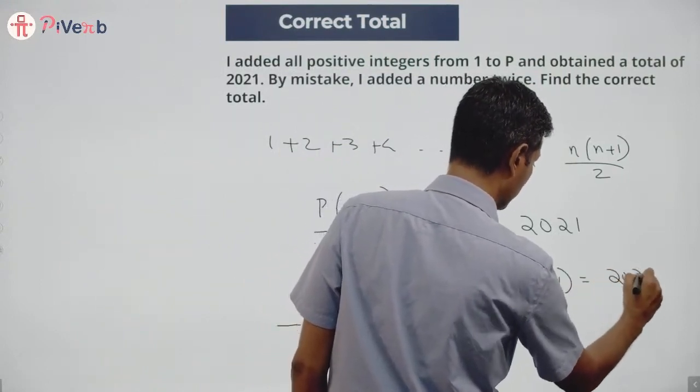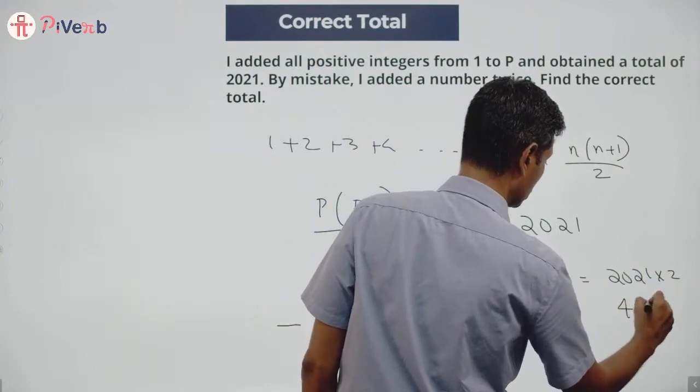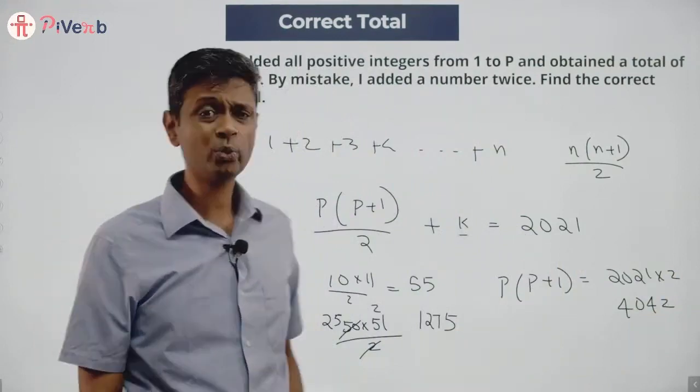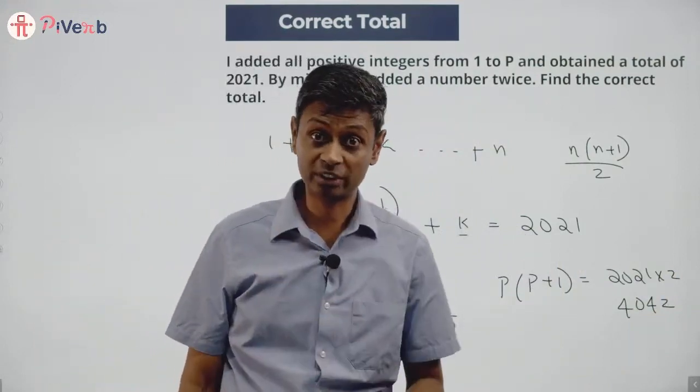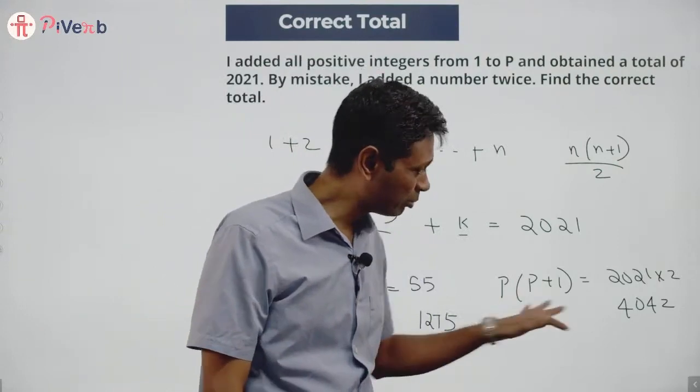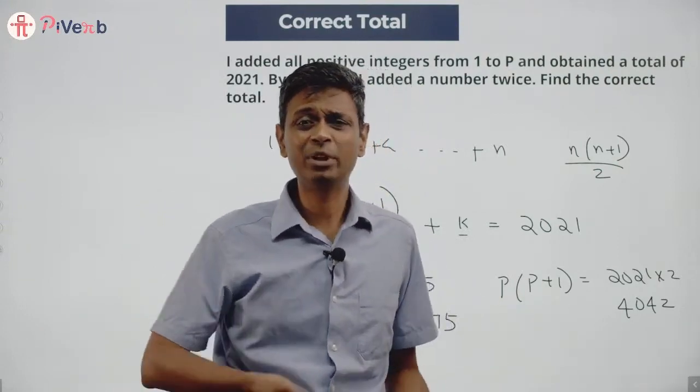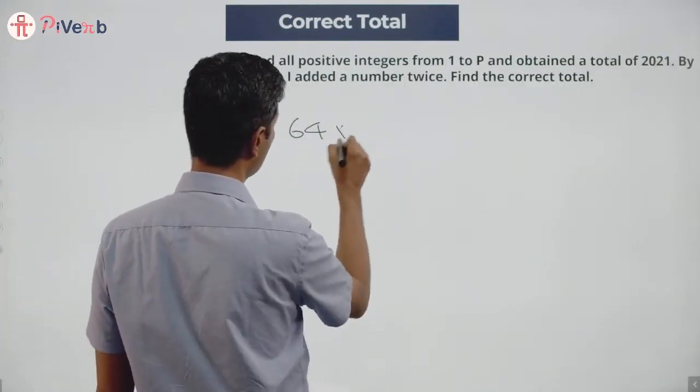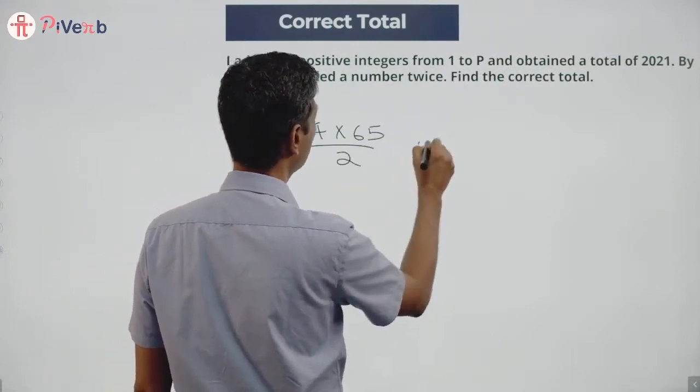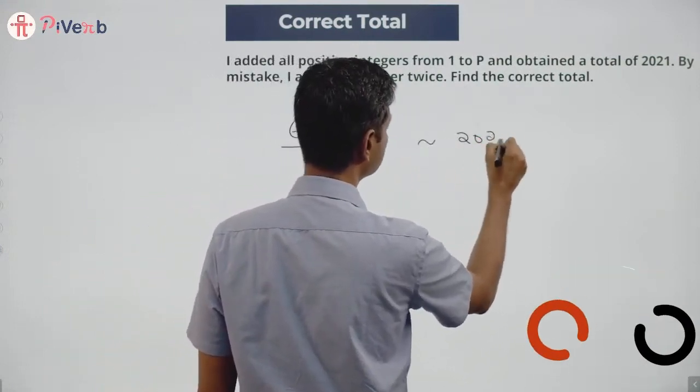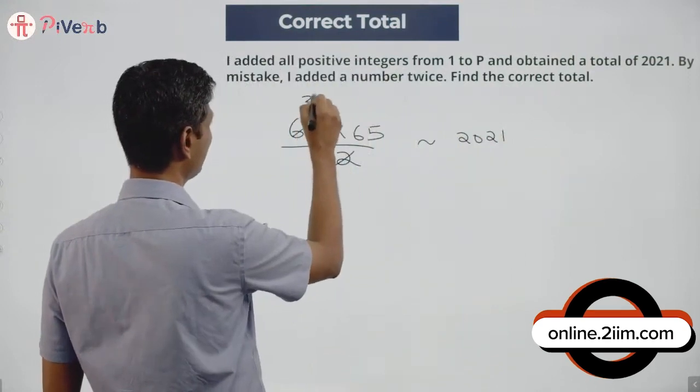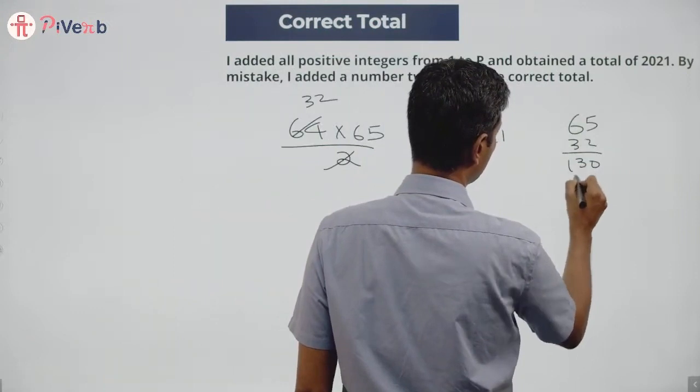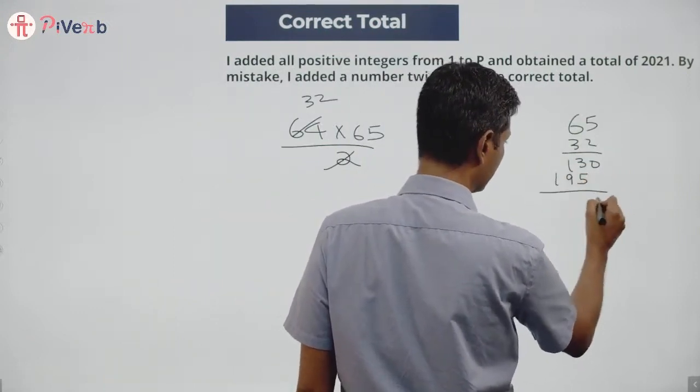p into p plus 1 is 2021 into 2: 4042, very close to p square. 60 square is 3600, 70 square is 4900. p into p plus 1 is 4042. I'm getting in between 60 and 70. Maybe 64 into 65 by 2. Maybe this is close to 2021. 65 into 32: this is 130, 195. Add this up. 2080, becomes more than 2021, but I'm very close.